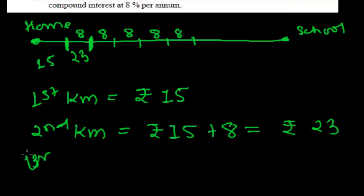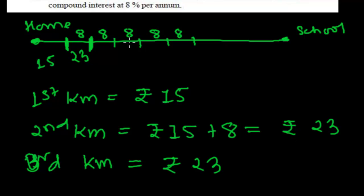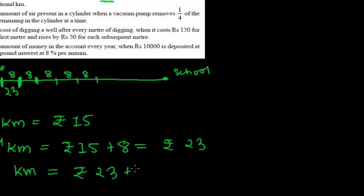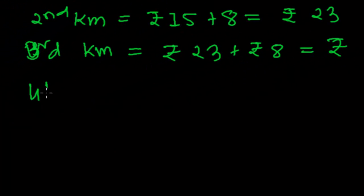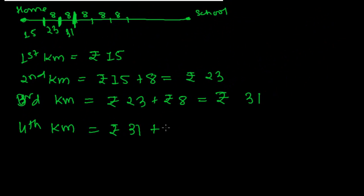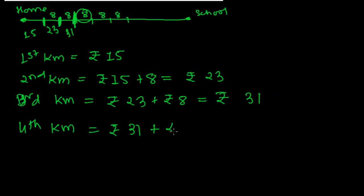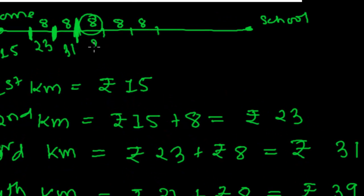For the third kilometer, up to second kilometer you have already paid rupees 23, and now an extra 8 rupees for the third kilometer. So again 8 is added, and now altogether you have paid 31 rupees. For the fourth kilometer, up to third kilometer you have already paid 31, and for the fourth kilometer you pay 8 rupees again. So 31 plus 8 is 39 — up to fourth kilometer you have paid 39 rupees.